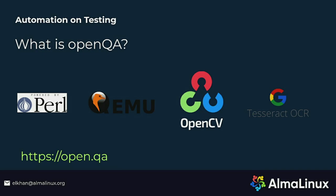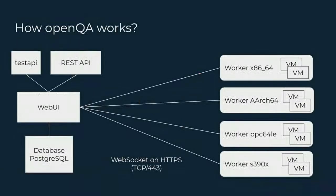It also supports serial-based tests. I tried to visualize the main components of OpenQA to make it easy to understand how it works. The left side is the server, and the right side shows the workers for each architecture and VMs. On the server part, we have a test API responsible for running the tests, a REST API and WebUI. The REST API is used for interaction and automation to push ISO images to testing, and a database to store the test results.